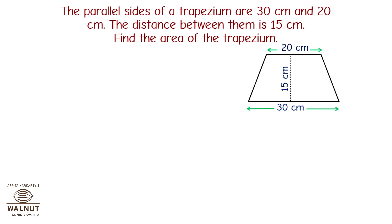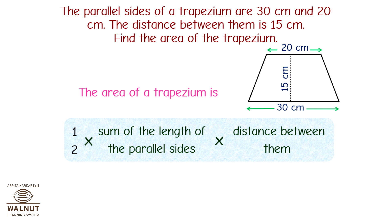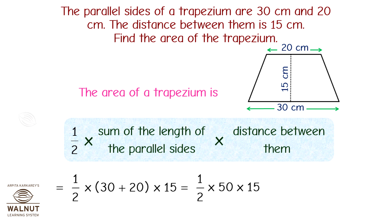The parallel sides of a trapezium are 30 cm and 20 cm, and the distance between them is 15 cm. Find the area of the trapezium. Area equals half into sum of the parallel sides into distance between them, which equals half into (30 plus 20) into 15, which equals half into 50 into 15, which equals 375 cm². Therefore, the area of this trapezium is 375 cm².